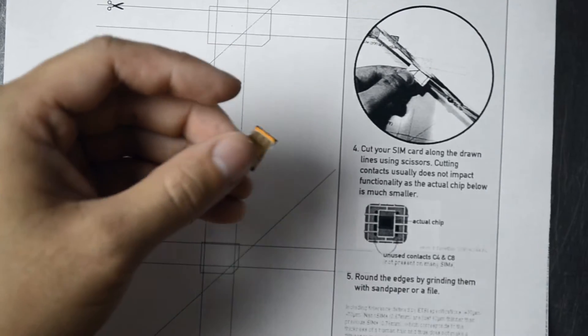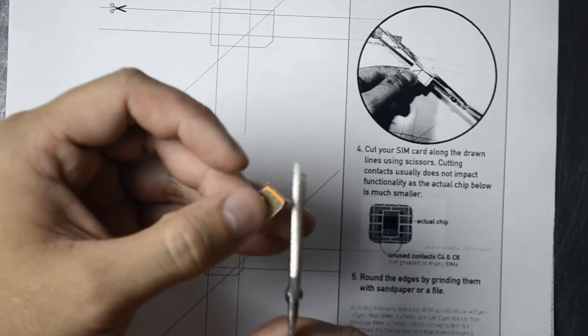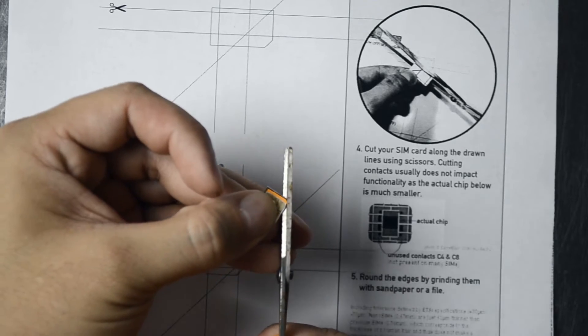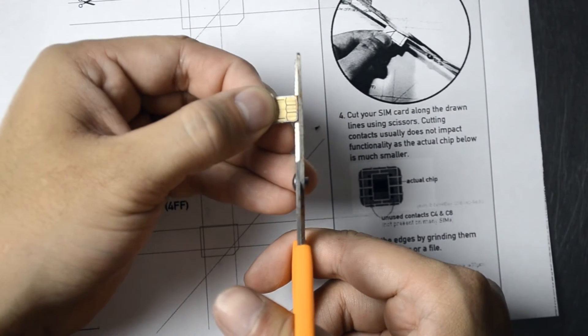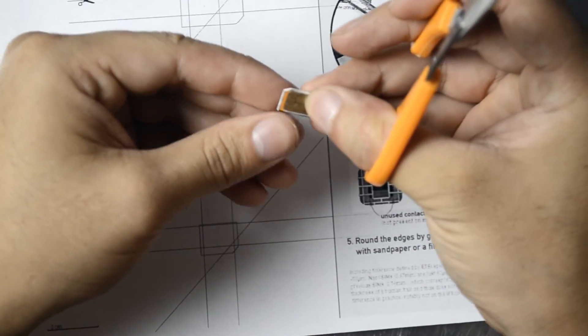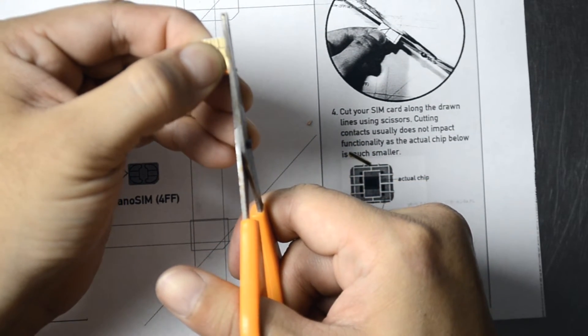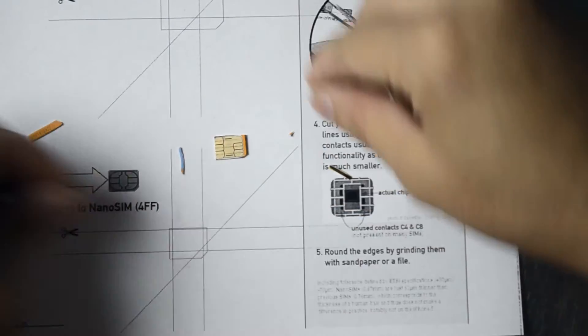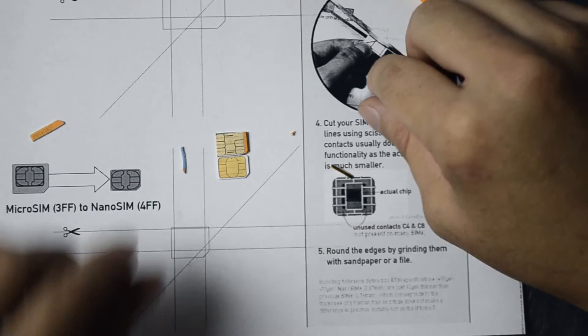It suggests that you also have a way to grind down the edge for this corner. This one still looks a little bigger, probably have to grind down a little more.